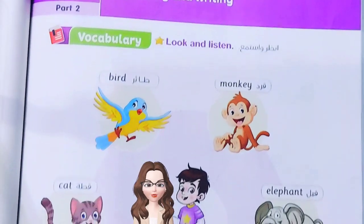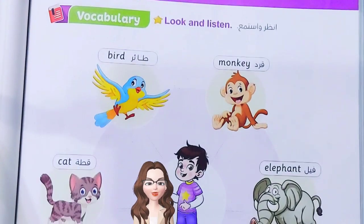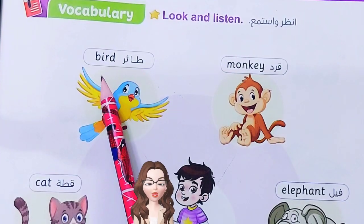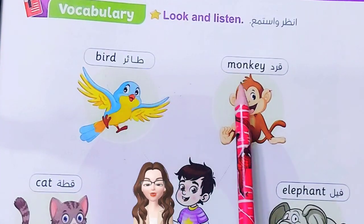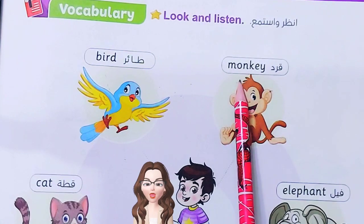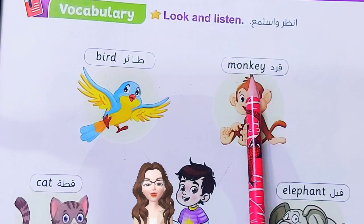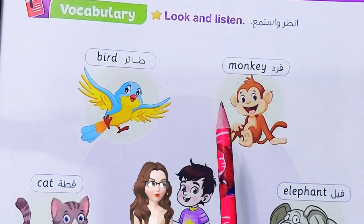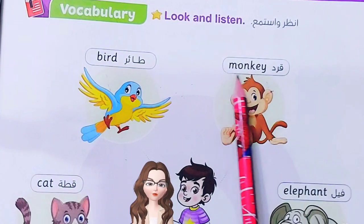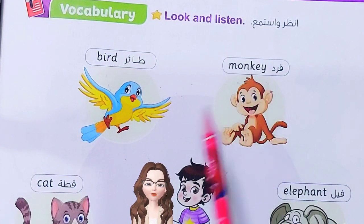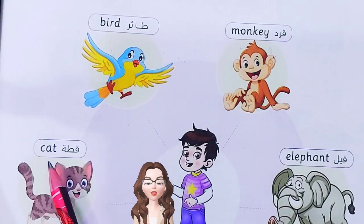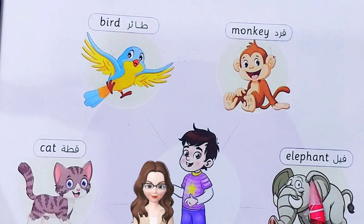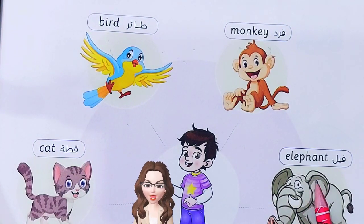It's a start — we have new vocabulary, but it's very easy. Repeat after me please: bird, monkey. Not 'monkey' — the correct pronunciation is 'monkey'. Cat, elephant.